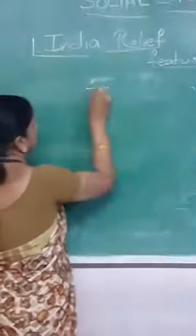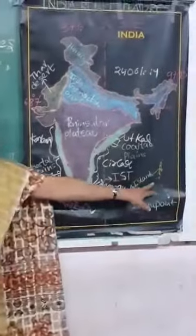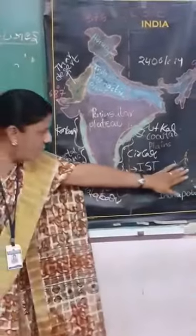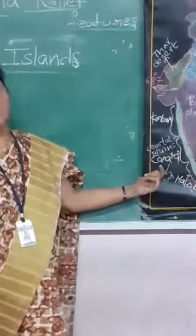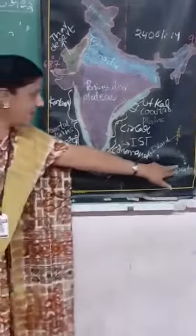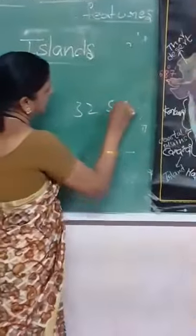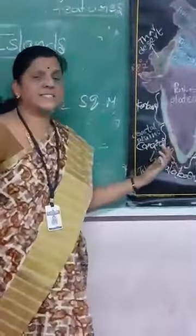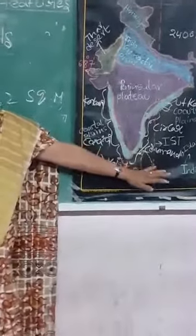The last feature is Islands. We have two types: Andaman and Nicobar Islands, and Lakshadweep Islands. The Andaman and Nicobar Islands are of volcanic origin and are located in the Bay of Bengal. Lakshadweep Islands are of coral origin and are located in the Arabian Sea. The southernmost point, Indira Point, is in the Nicobar Islands. Lakshadweep Island covers 32 square kilometres and is famous for its flora and fauna. These are India's relief features — thank you.